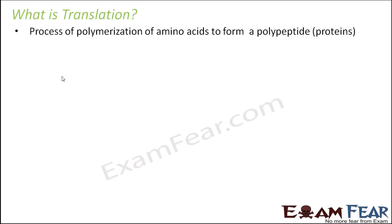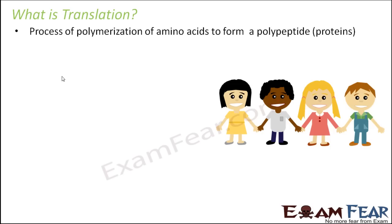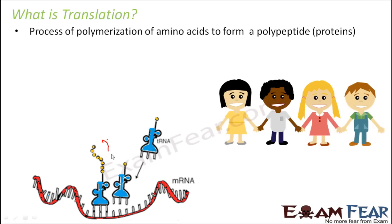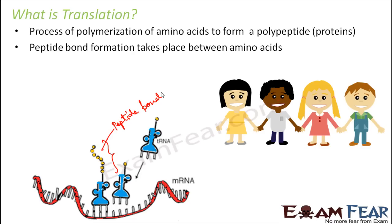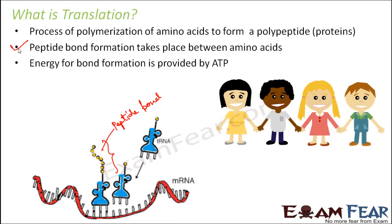Let us focus on how peptide bond formation takes place to complete the process of translation. Just as four friends standing and holding hands with each other, similarly each amino acid being passed on by the tRNA needs to be linked with a peptide bond. For any bond formation, energy is required, and that energy is provided by ATP.